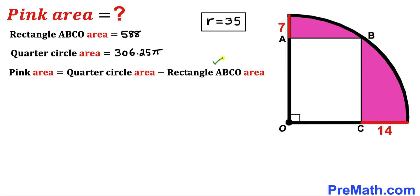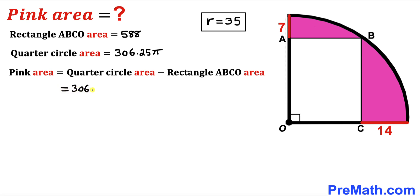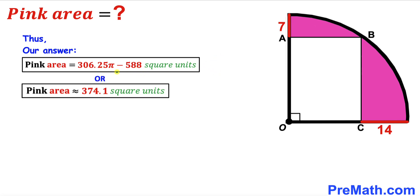Here's our final step. The pink shaded area equals the area of the quarter circle minus the area of rectangle ABCO. Substituting: 306.25π − 588 square units. So the pink shaded area is 306.25π − 588 square units, which is approximately equal to 374.1 square units.